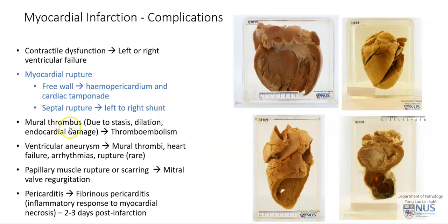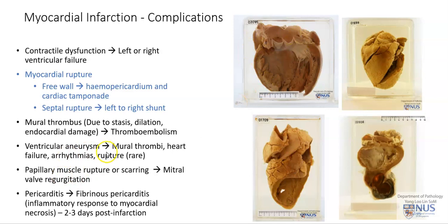Other complications include the presence of mural thrombosis, as is seen here, and there is a separate video describing this. Ventricular aneurysm with potential formation of thrombi — here is a ventricular aneurysm with a mural thrombus, and there is also a separate video describing this.